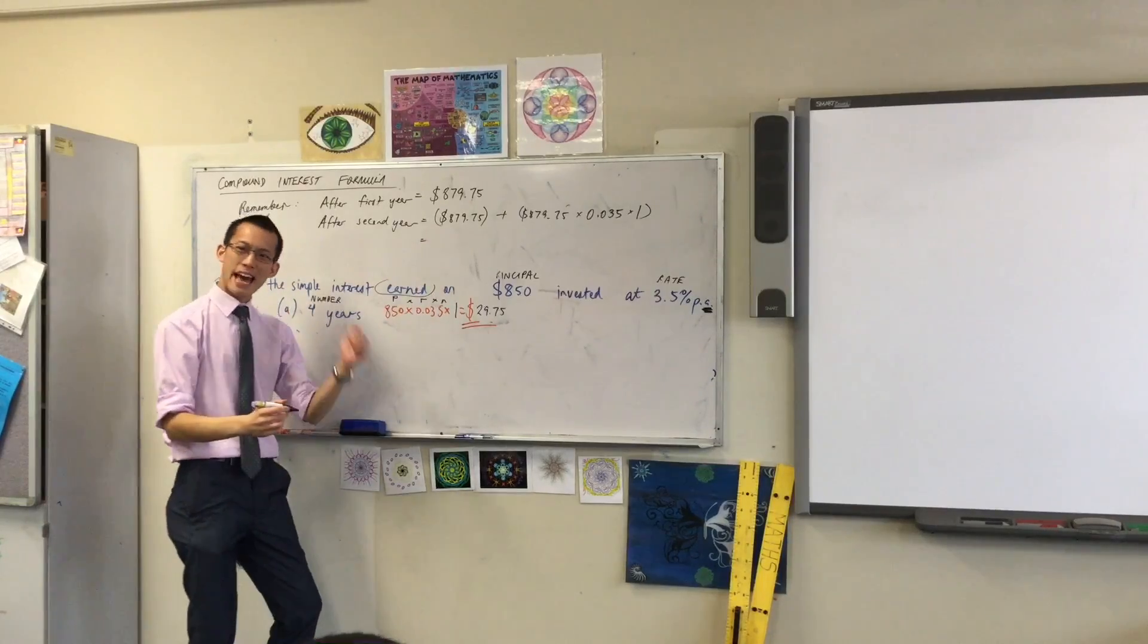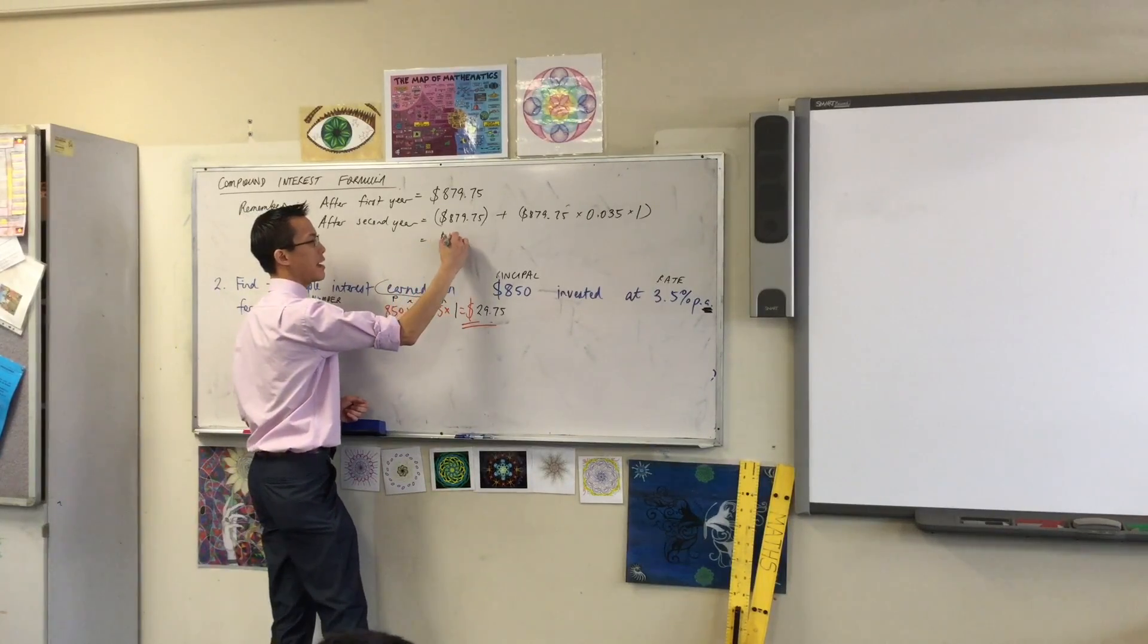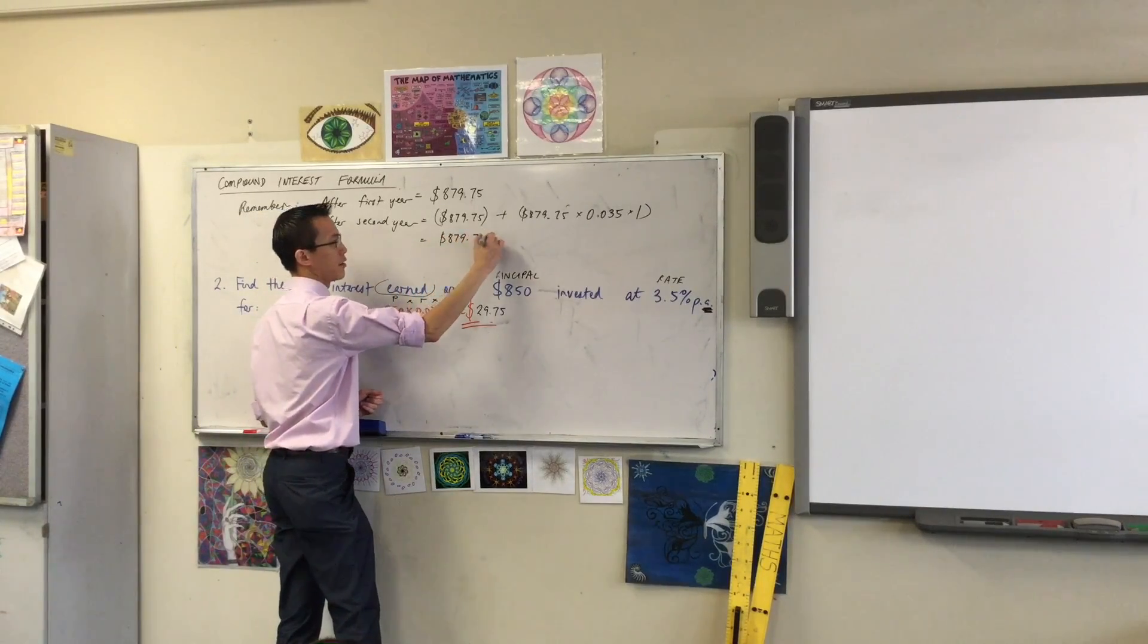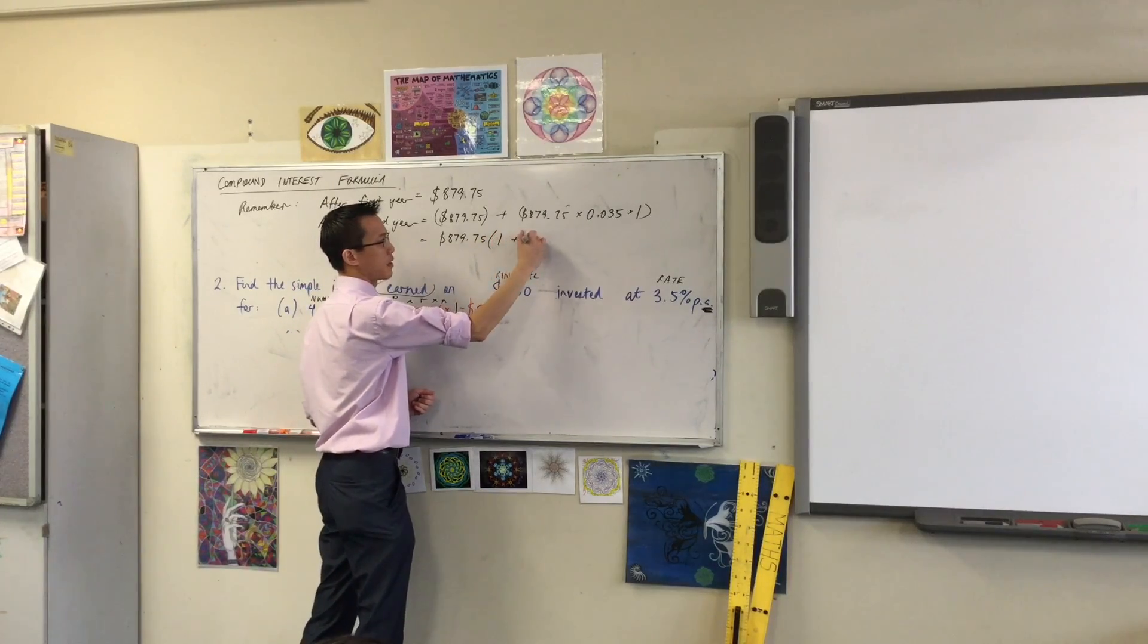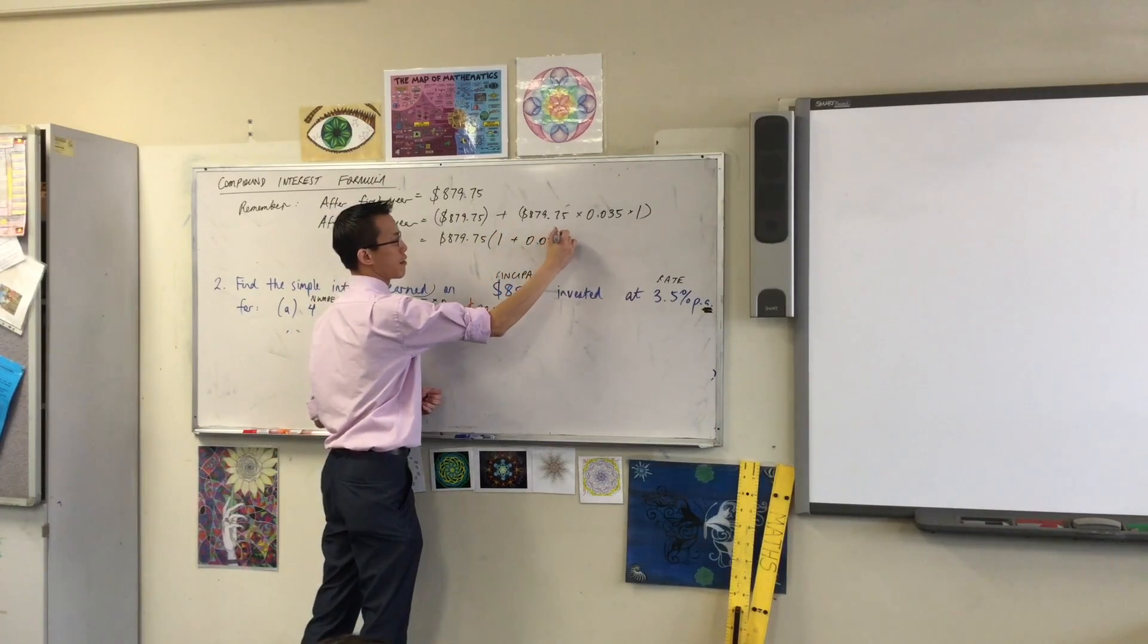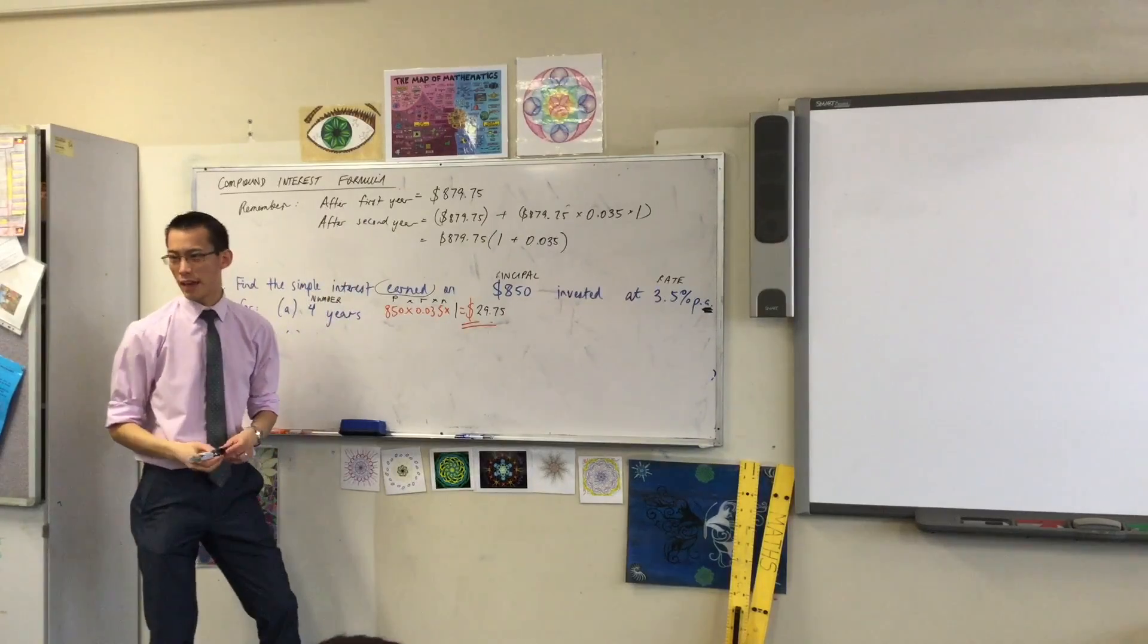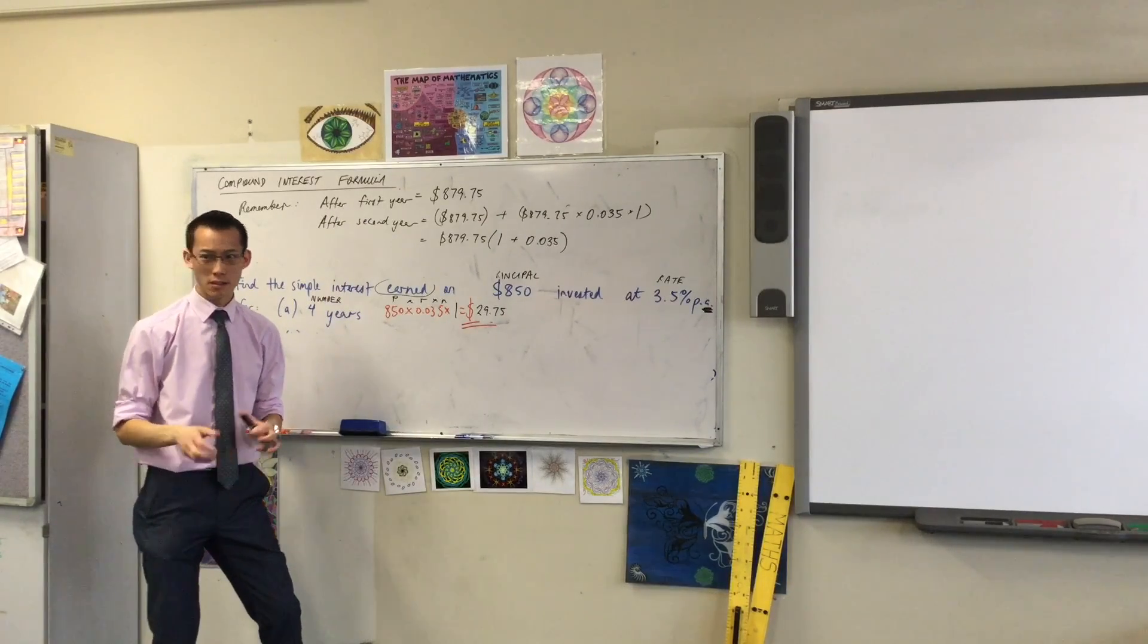So I just want to write that out the front. 879.75, 1 plus 0.035. That's what I've got in there after I take out the factor. Are you with me so far?